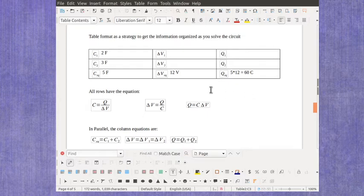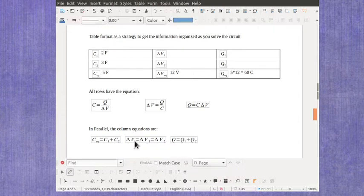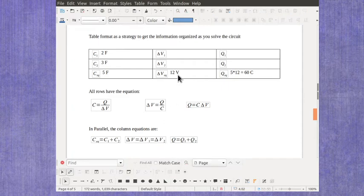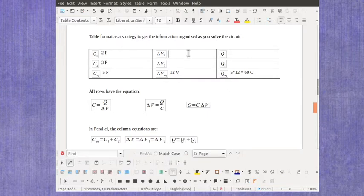Now you might stop at this point and say, but I don't have any rows or columns left with only one unknown. But in the table, there's always going to be one column. And in parallel, it's the voltage column where all the values are equal. And that means once I know my 12 here,